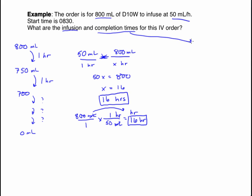The completion time is what time it will be when the bag is empty. Starting at 0830, we add 16 hours. The minutes stay at 30. For the hours: 8 plus 16 equals 24, giving us 2430. We need to keep in mind that when adding time in military format, you cannot have a time like 8 hours and 70 minutes — you must carry values correctly.